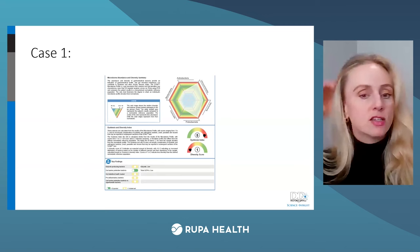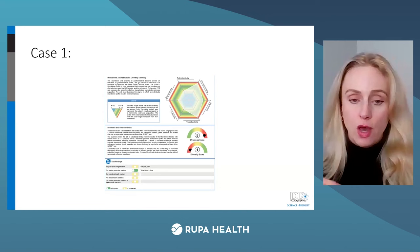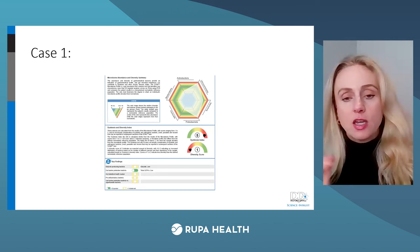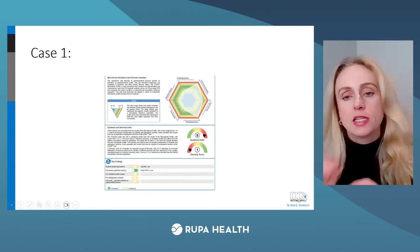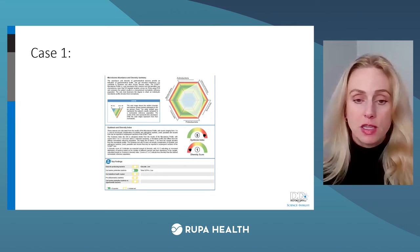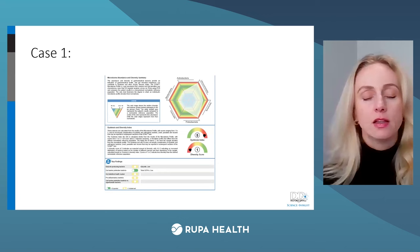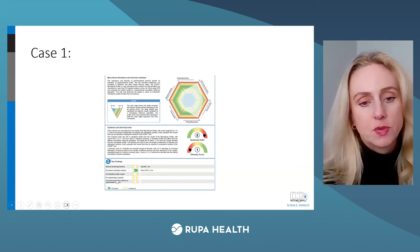The gut barrier protective bacteria are within range, so we're not thinking about intestinal permeability — that's great. The gut intestinal health marker shows that bacteria which decrease inflammation in the colon are too low, so again we want to feed them soluble fiber. The pro-inflammatory bacteria are too high. This is a diet-induced dysbiotic situation with elevated pro-inflammatory bacteria. To help the colon, you could consider various options: olive oil, glutamine, chamomile — many different things.